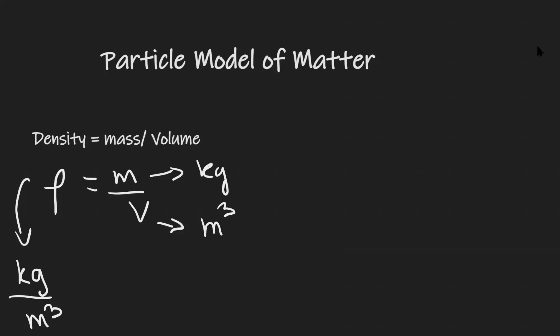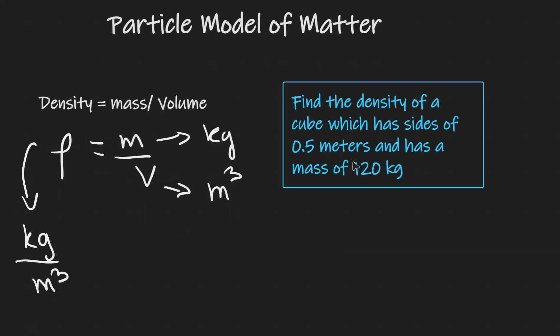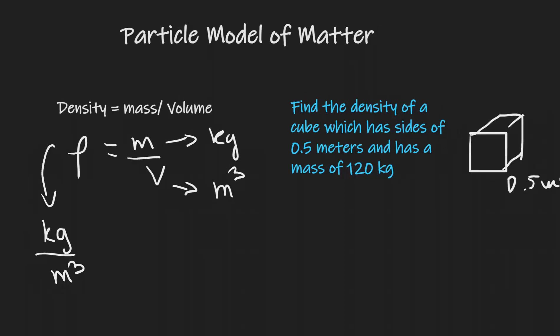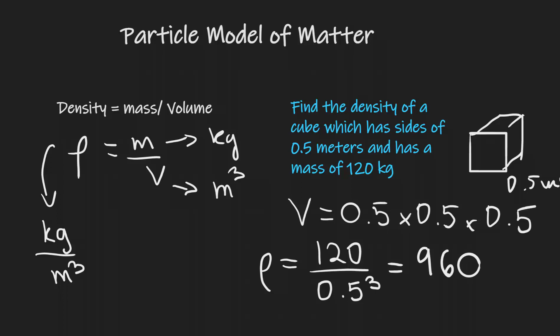Let's apply this to an example question. Can we find the density of a cube which has sides of 0.5 meters and has a mass of 120 kilograms? Well, because each side of the cube will be 0.5 meters, the volume of the cube will just be equal to 0.5 meters times 0.5 meters times 0.5 meters. The density in this case will simply be equal to 120 divided by 0.5 raised to the power of 3. If we put this into a calculator, we are going to get 960 kilograms per cubic meter.